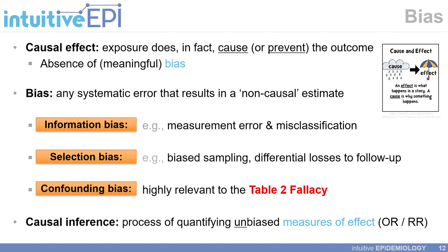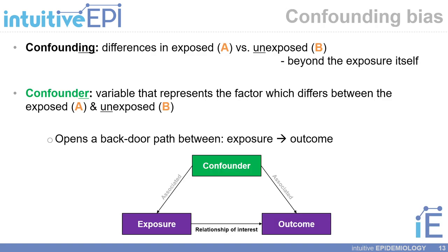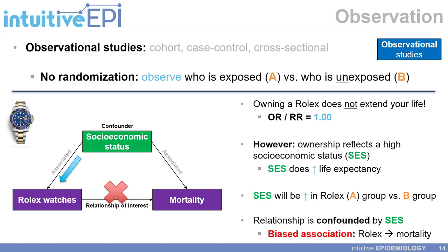Causal inference is the process of quantifying unbiased measures of effect, such as odds ratios or risk ratios. Confounding is differences in the exposed and unexposed groups beyond the exposure itself, and a confounder is a variable representing the factor that differs between those groups. One way to think about this is that a confounding variable opens a backdoor path between the exposure and the outcome under study. In observational studies — including cohort, case-control, and cross-sectional studies — we do not have the benefits of randomization.